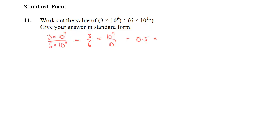But in that form, we can write 3 over 6 as 0.5. And then for 10 to the 9 divided by 10 to the 11, we simply subtract the powers and we have 10 to the power minus 2.